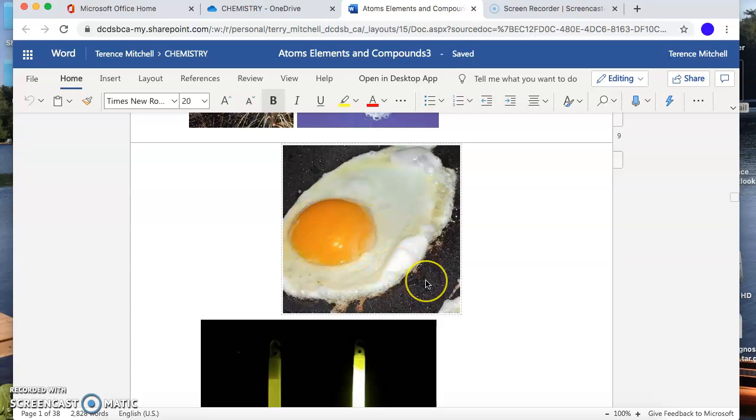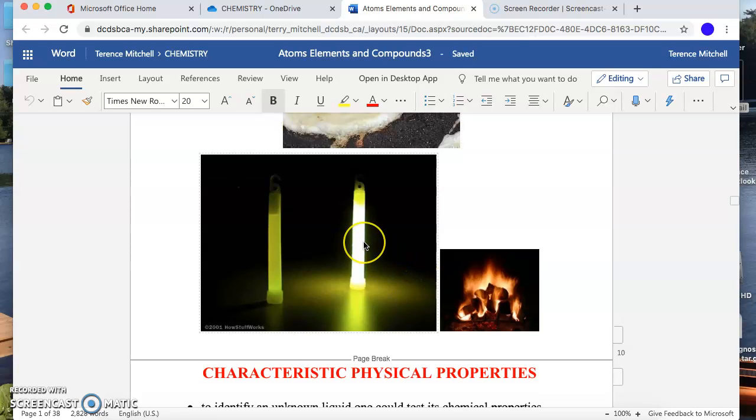Glow sticks, I'm sure you've all used these. They contain a couple chemicals that are separate from each other. When you crack them and the chemicals start to come into contact with each other, chemical changes take place and we get whole new substances. How do we know that there's a whole new substance in there? Well in this case it's giving off light. In this case we probably can't smell it, we can't see any bubbles, but we can see that there is light given off.